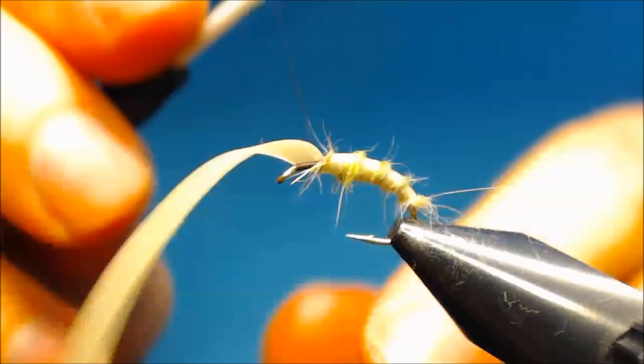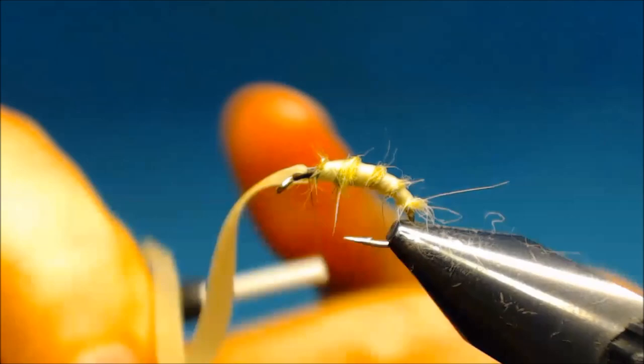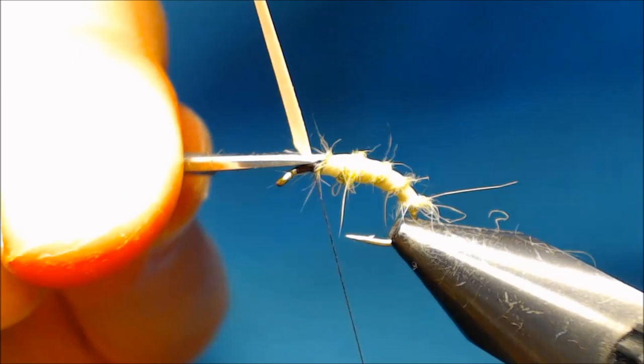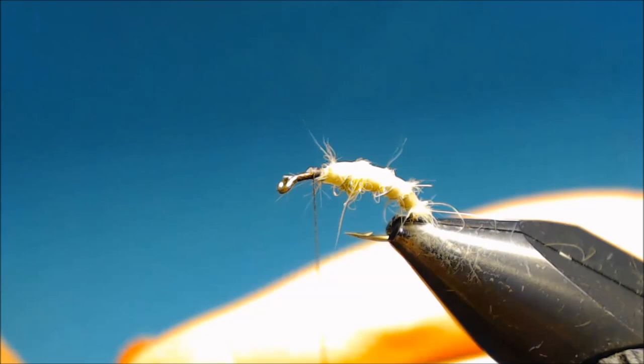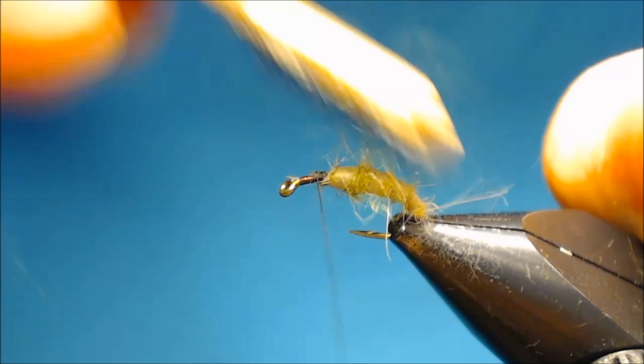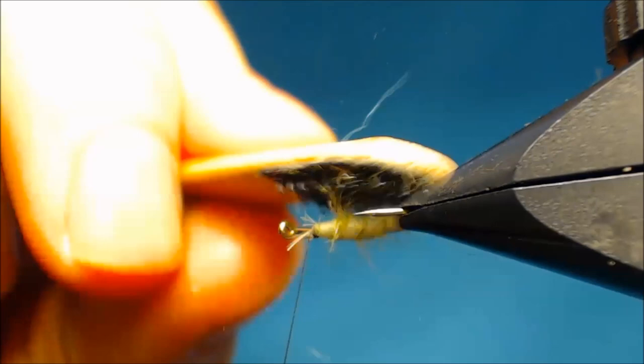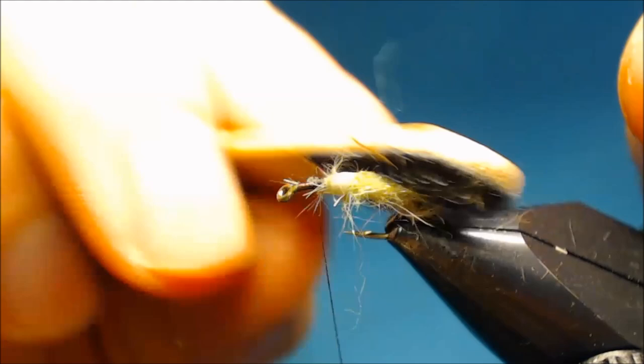To represent some legs or something on this little critter. And then take your velcro and brush the body, picking out the dubbing from in between the wraps of ribbing. And that's the body brushed out.